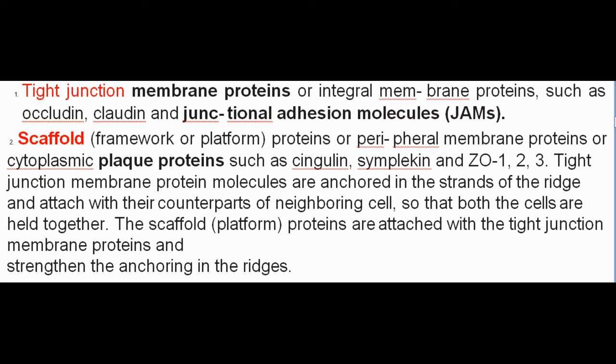Tight junction membrane protein molecules are anchored in the strands of the ridge and attach with their counterparts of the neighboring cell, so that both cells are held together. The scaffold or platform proteins are attached with the tight junction membrane proteins and strengthen the anchoring in the ridges.